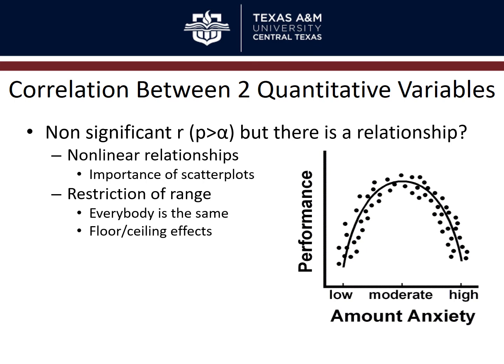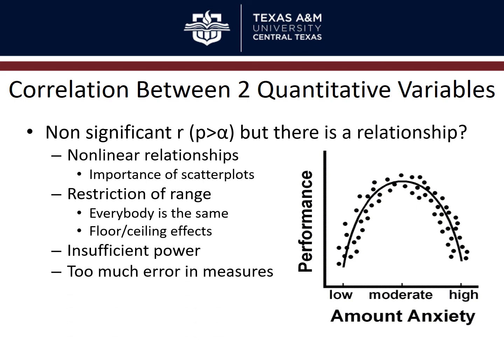So reasons for non-significant correlations include: non-linear relationships, restriction of range, and insufficient power — often caused by small sample size or insufficient variability. Another issue is too much error variance from poorly constructed measures that don't accurately measure your predictor or criterion variables. That creates too much noise in the data, and you won't be able to see a relationship due to poor reliability and poor construct validity.